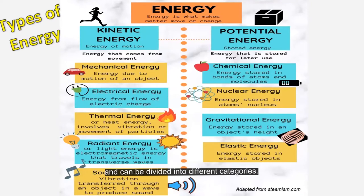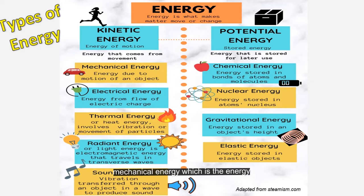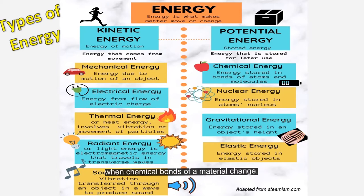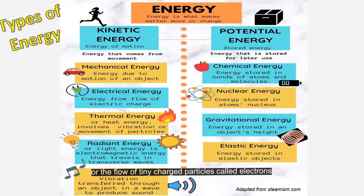Energy comes in different forms and can be divided into different categories. First is the state of energy — whether the energy is in motion, or kinetic, or stored energy waiting to be used, meaning potential energy. Then there are different forms: mechanical energy, which moves objects by applying force; chemical energy, released when chemical bonds change; radiant energy, which travels in waves; thermal energy, or heat energy involving the vibration of particles; and electrical energy, the flow of tiny charged particles called electrons through a conductor like a copper wire.